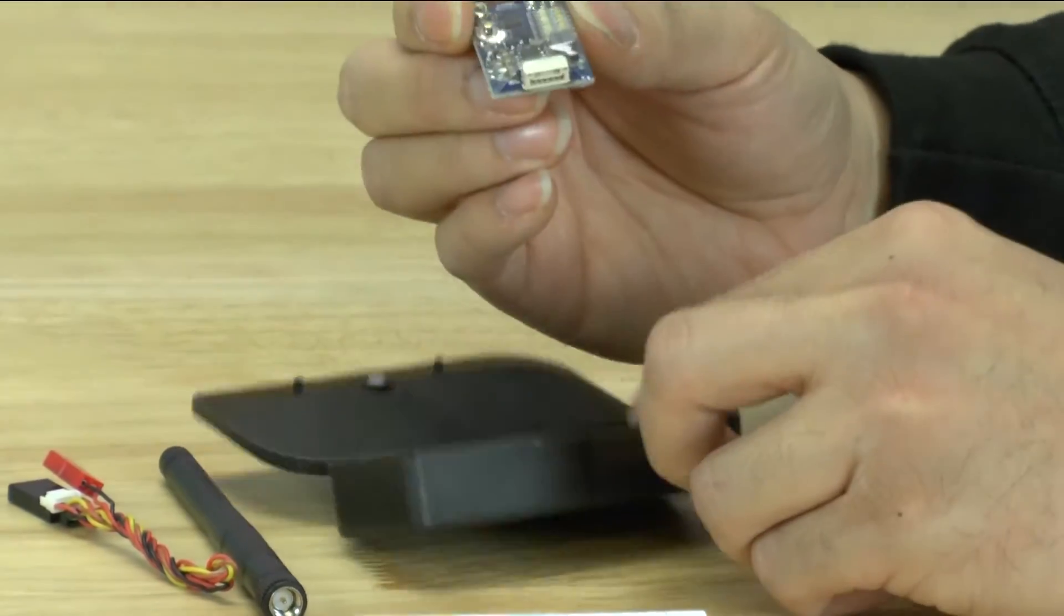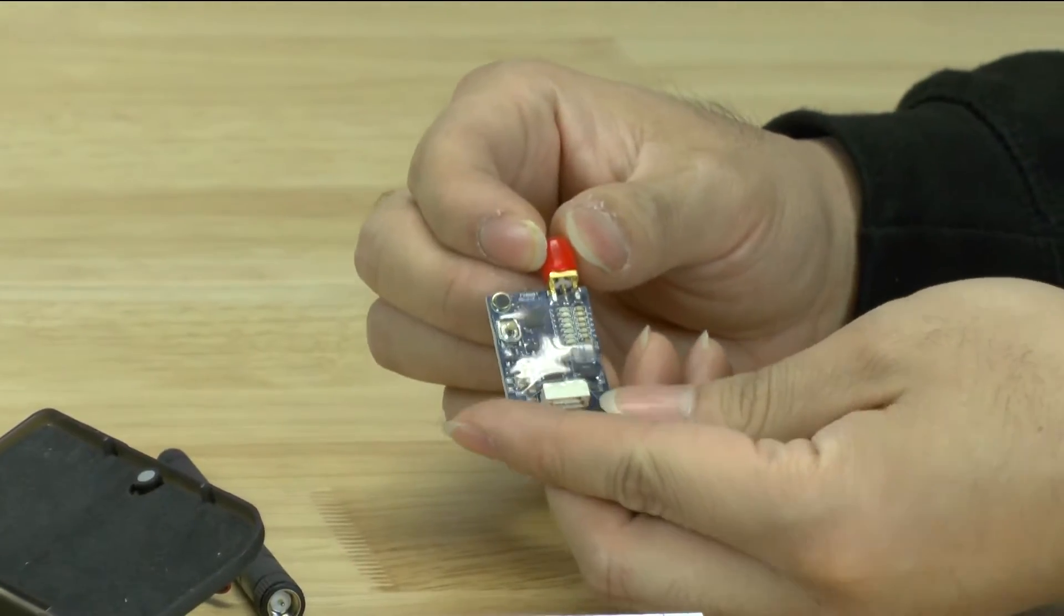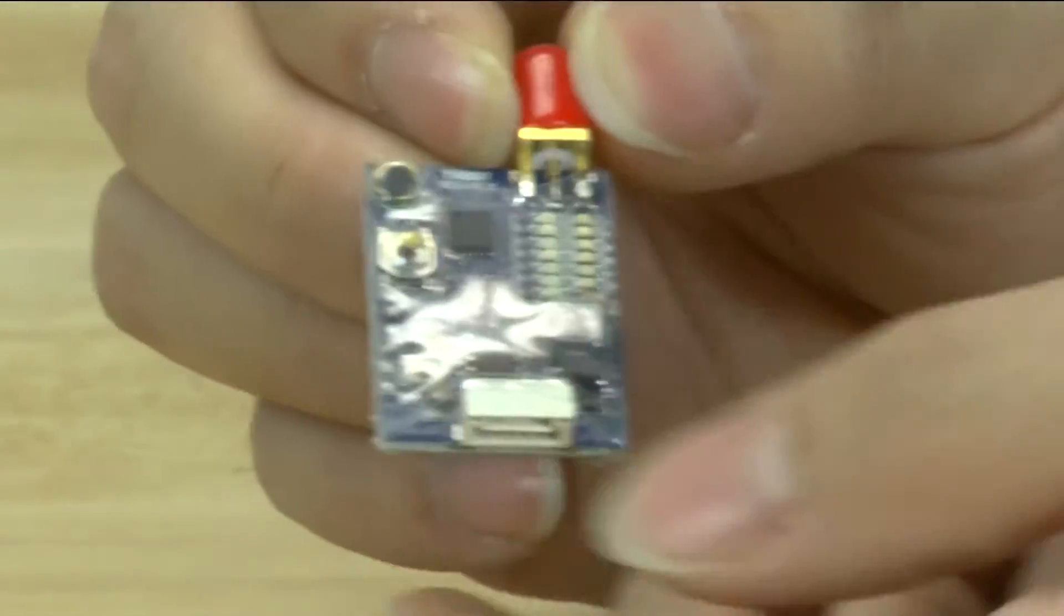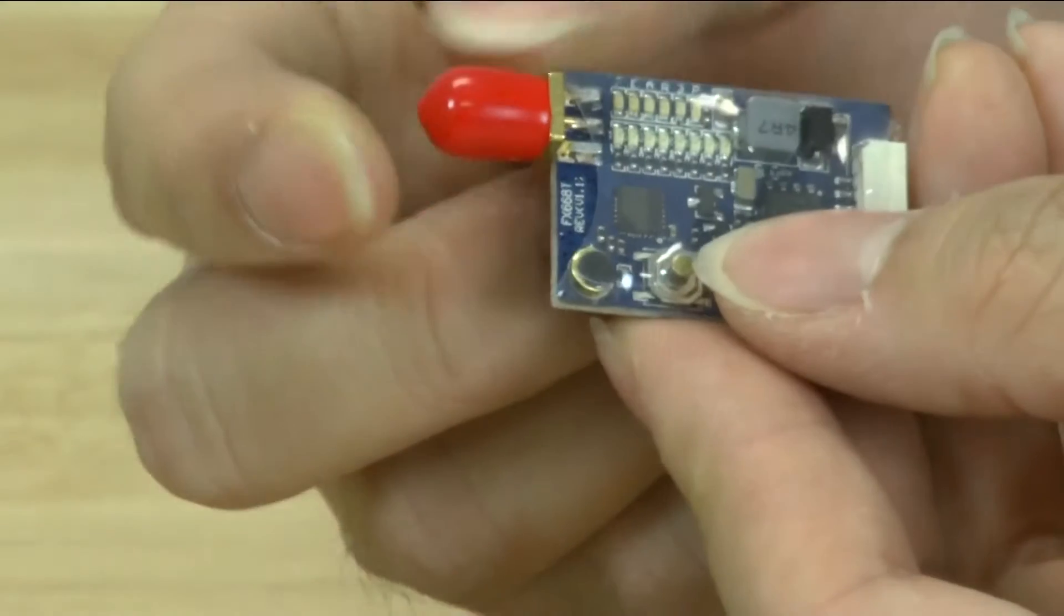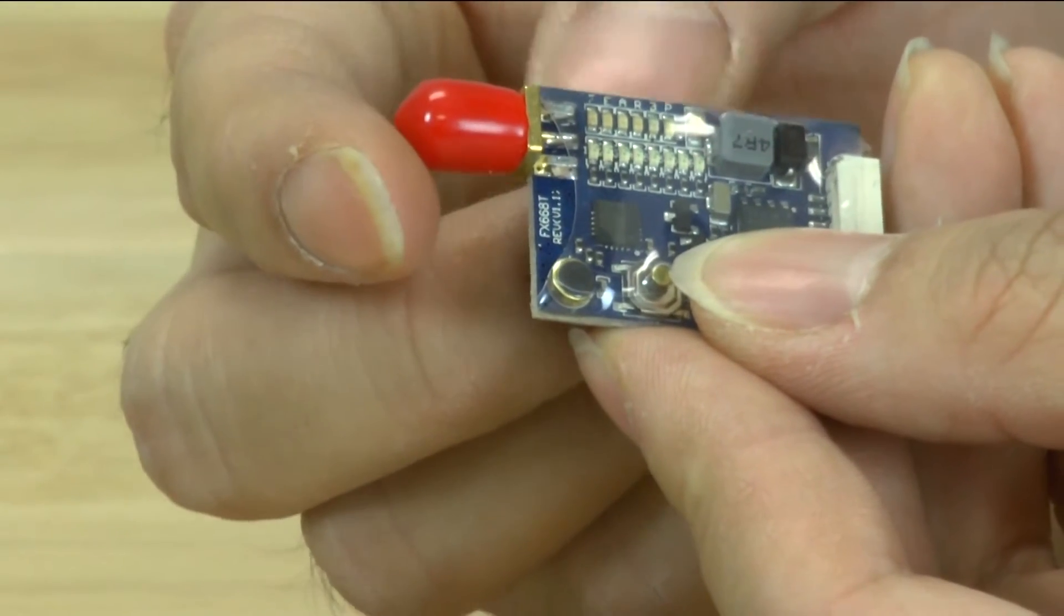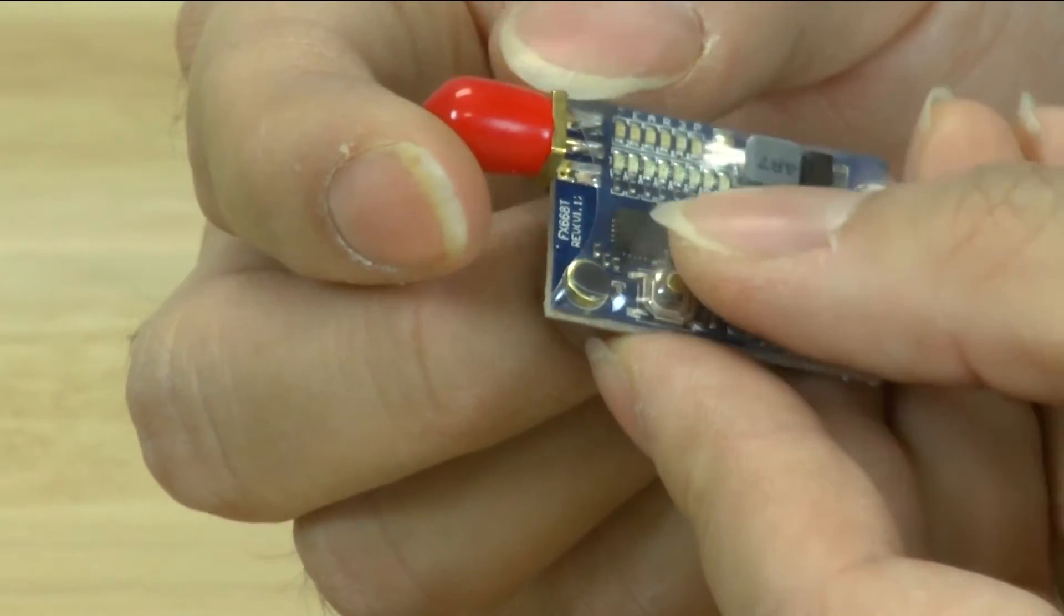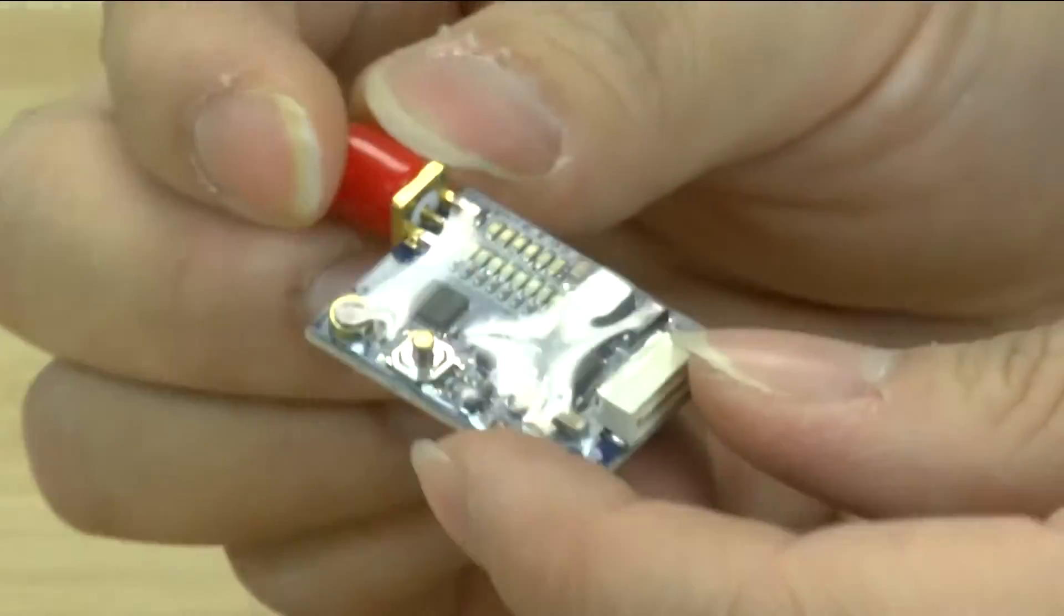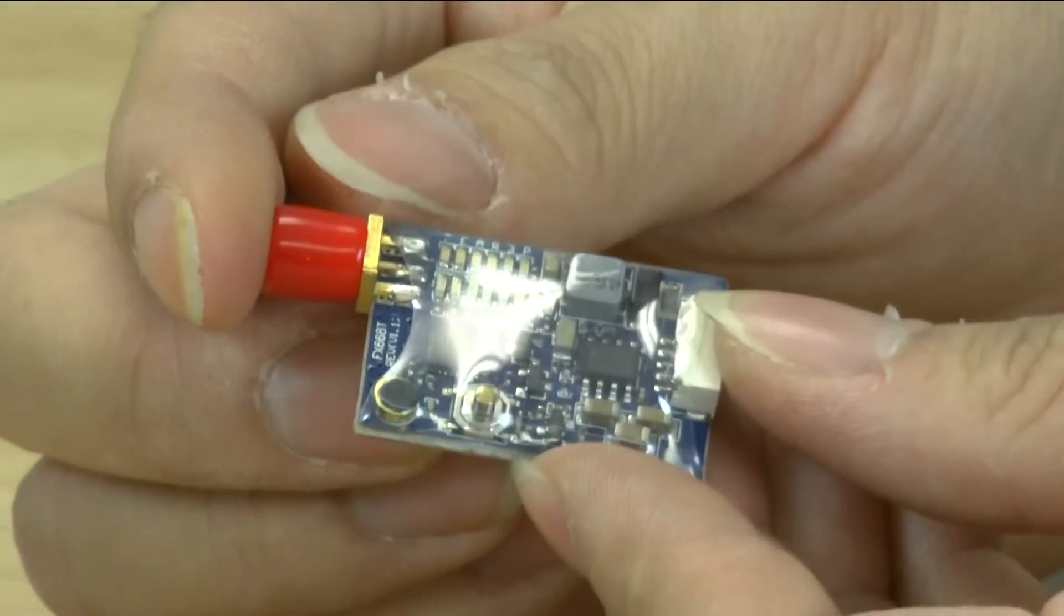As you can tell from this VTX the overall layout of things that you care about is the same. We have the push button on this side and then we have the LEDs up top. So the top LEDs will control your band and the bottom LEDs will control your channel. So let's go ahead and plug this up and we'll show you what the controls are for this VTX.